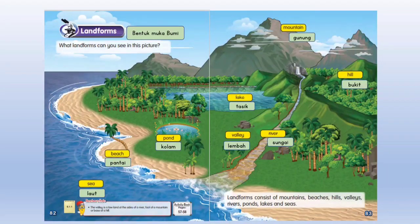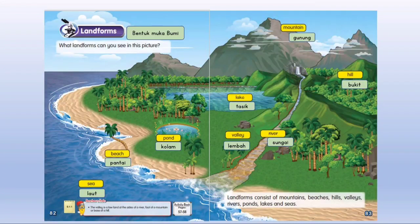Landforms — Bentuk Muka Bumi. Landforms consist of mountains, beaches, hills, valleys, rivers, lakes and seas.